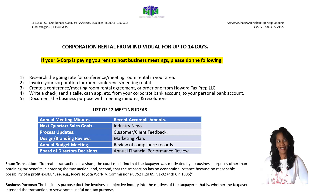You have to show the payment being made in order for the corporation to take the tax deduction. The fifth thing you want to do is make sure that you document the business purpose of the meeting, and you can do this through meeting minutes or even simply through your resolutions for your business.